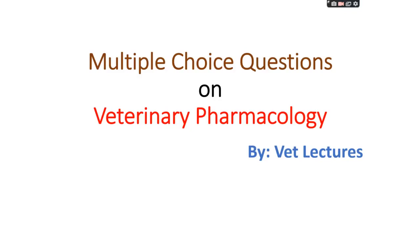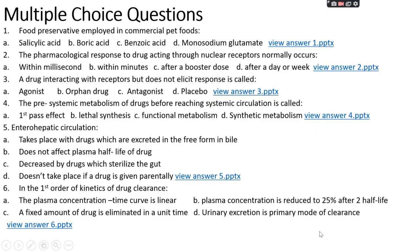Hello all, welcome to my channel. Today we will discuss multiple choice questions on veterinary pharmacology. Question number one: food preservatives employed in commercial pet food — option A: salicylic acid, option B: boric acid, option C: benzoic acid, or option D: monosodium glutamate.